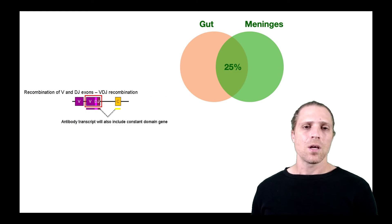So what the authors did was they sequenced the RNA of B cells in the gut. They took one centimeter of the gut and sequenced the RNA of the B cells that they found in that portion of tissue. And they also sequenced the B cell receptor of cells in the meninges of these mice, and what they found was that there was a 25 percent overlap between the sequences of B cell receptors in B cells from the gut and B cells from the meninges.